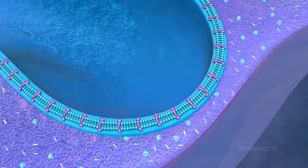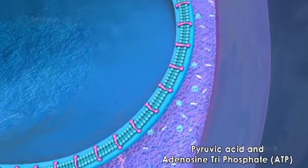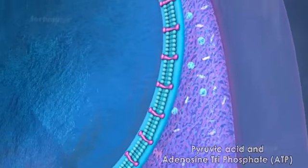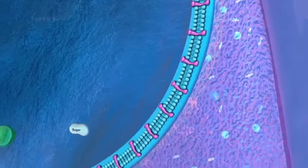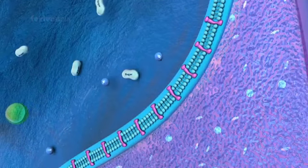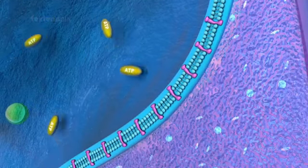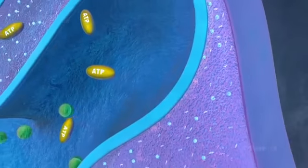Such as pyruvic acid and adenosine triphosphate, ATP. On the cristae, sugar is combined with oxygen to produce ATP, the primary energy source for the cell.